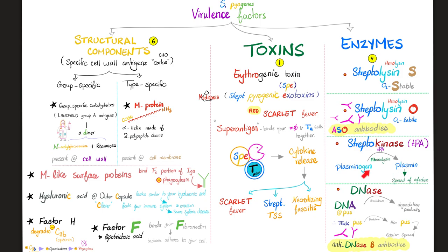Staph aureus does not have that widespread infection most of the time because it lacks streptokinase. Staph aureus has staphylothrombin to make a clot. Conversely, strep pyogenes has fibrinolysin to break down clots — and that's why streptococcal infections are known as flesh-eating bacteria, because they spread like fire.